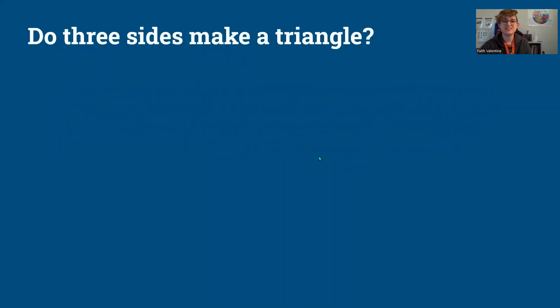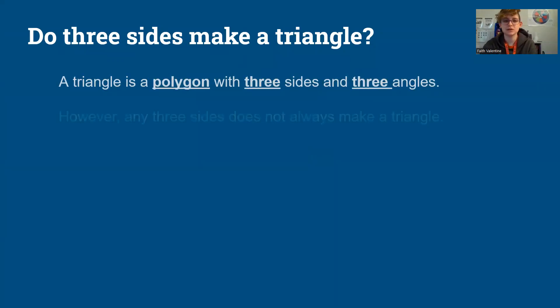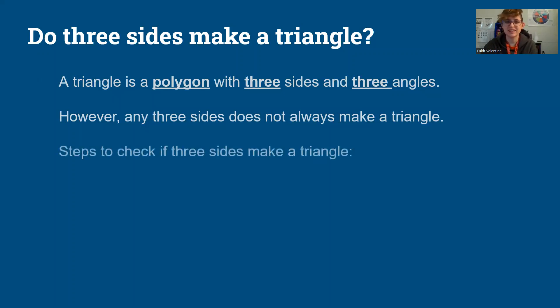So do three sides always make a triangle? We know that a triangle is a polygon with three sides and three angles. But if I give you any three sides it doesn't always make a triangle. So how can we figure that out?